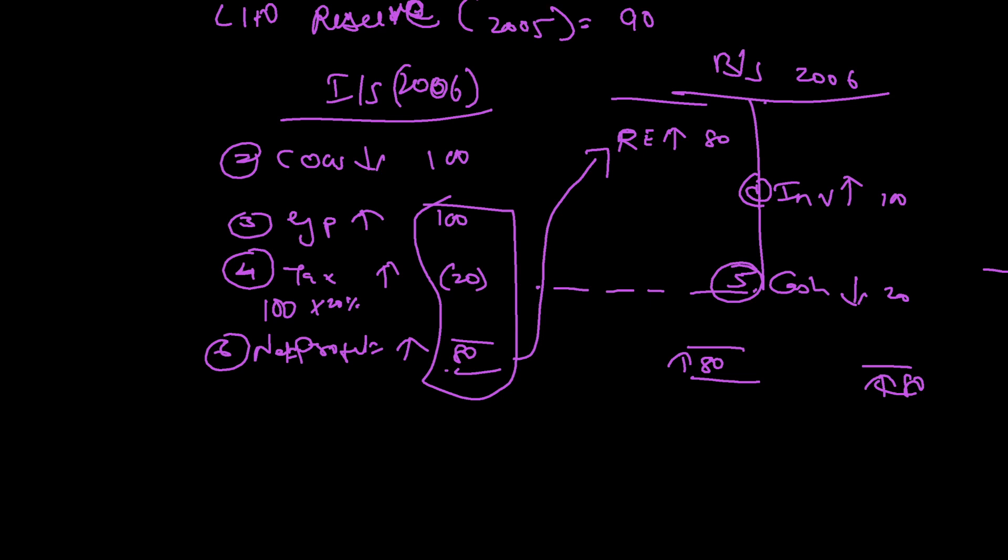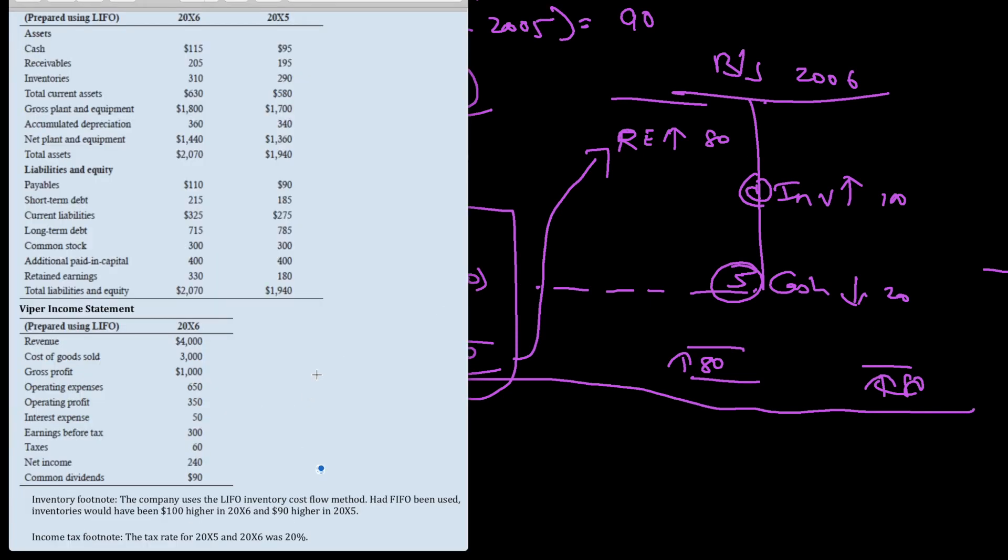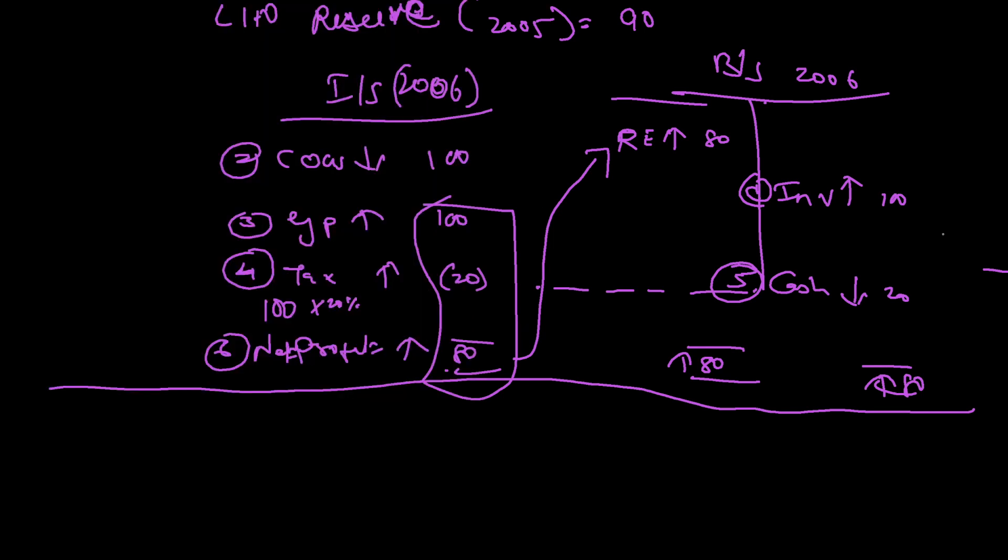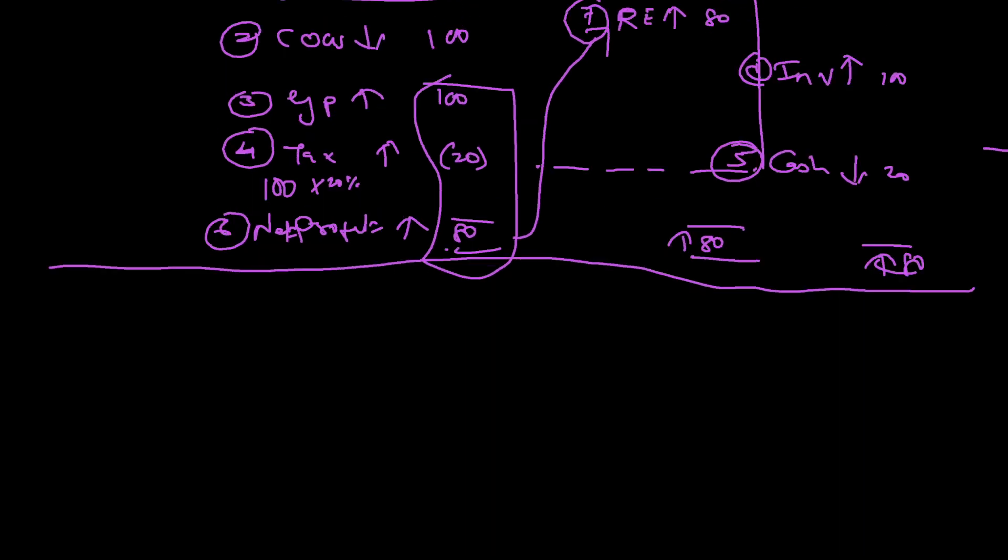Now you see, overall the balance sheet goes up by 80, and over here also it goes up by 80. These are the seven standard steps that you have to know when you convert from LIFO to FIFO. The sum actually ends here, but I'm going to elaborate further because they have given 2005 data as well.